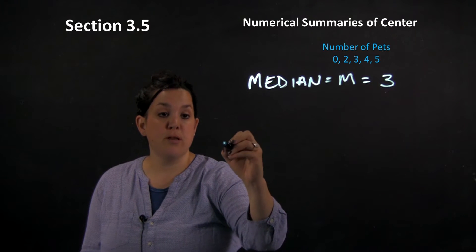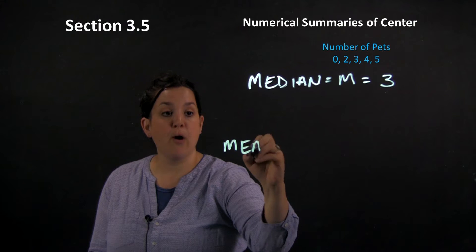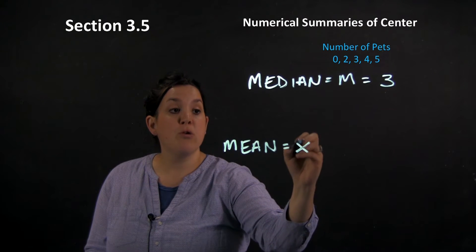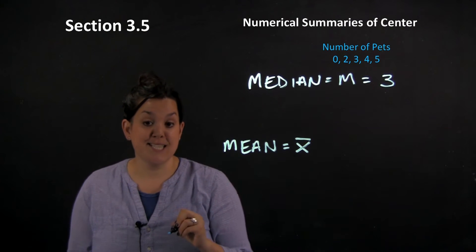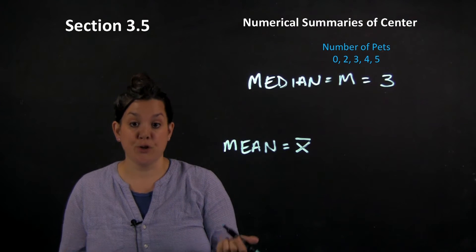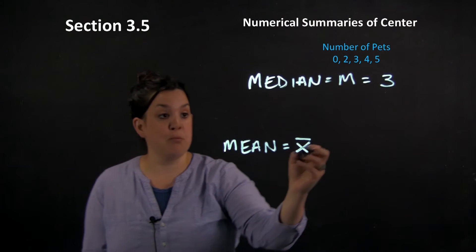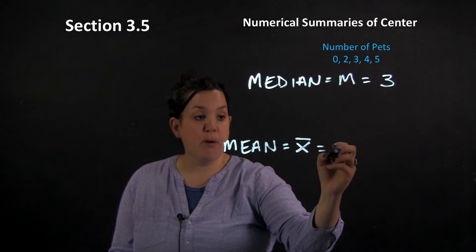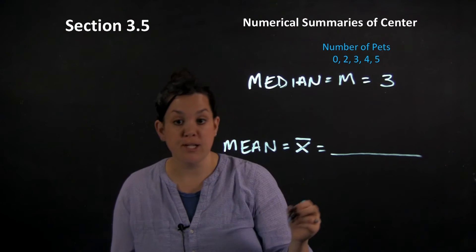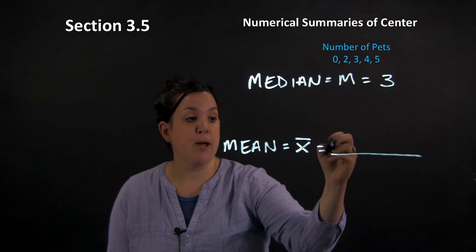The next measure of center that we have is going to be the mean. So the mean is the arithmetic average of a data set. We use x̄ to represent sample mean, so it's the notation or the symbol used to represent the sample mean. Now you've all probably calculated an average before, so the mean is the statistical way of describing average.